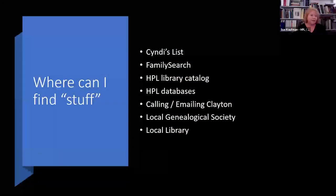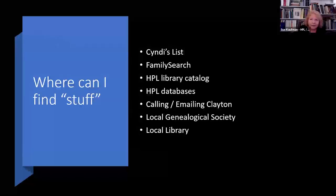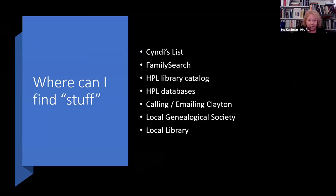Now we've seen that there's all kinds of stuff out there. To recap: the most important thing is to do your pedigree chart, come up with your questions, then call us and we can give you information and referral while you become familiar with the records that are out there. Where can you find stuff? I'm going to go over Cindy's List, FamilySearch, our library catalog, and calling us. Engage your local genealogy society or local library — these are people who will know about material specific to your area.